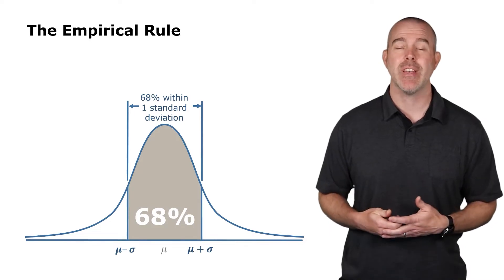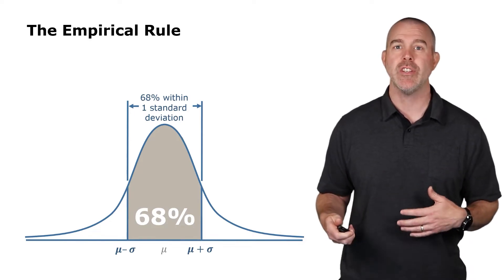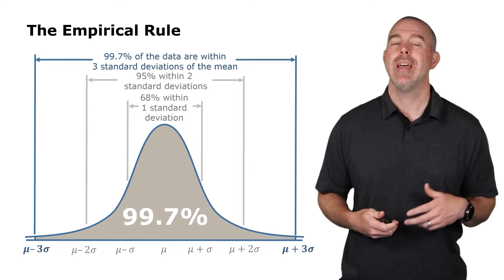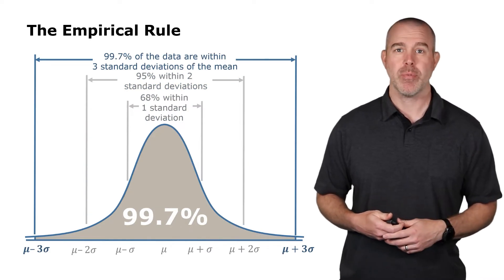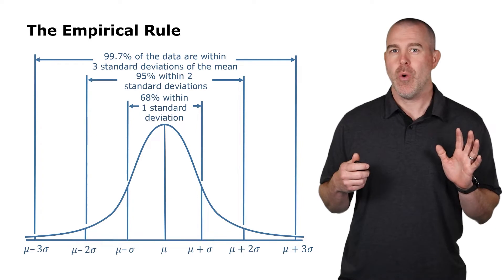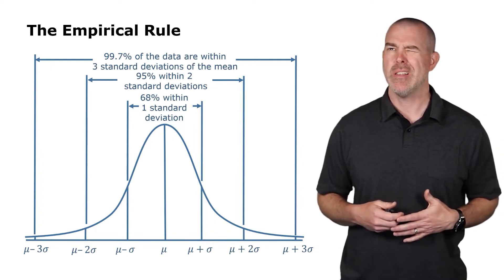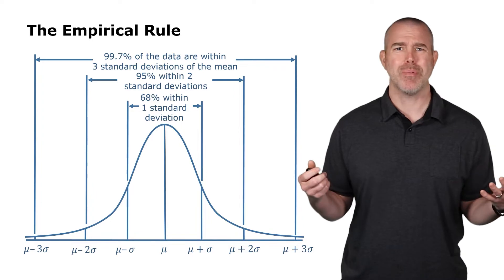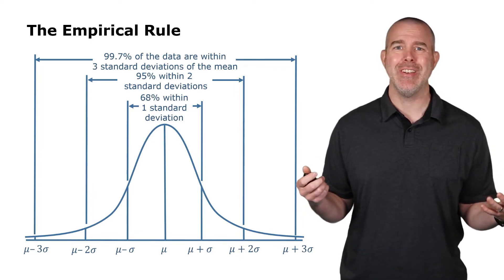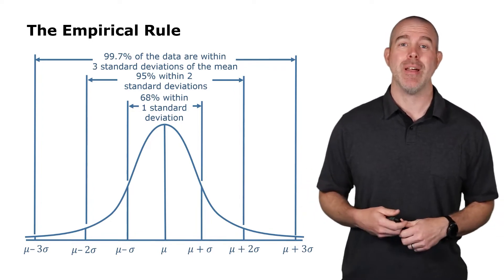If we have a distribution that happens to fit this perfect bell-shaped curve, we said there should be 68% of the observations within one standard deviation, 95% within two, and then 99.7% within three. So the question we want to investigate was where did those percentages come from? And that's what we're going to talk about in this video.